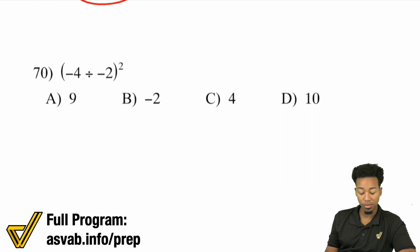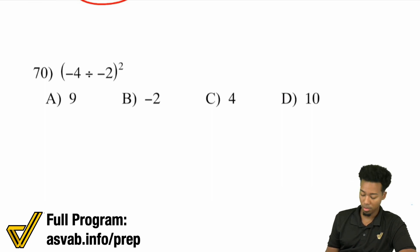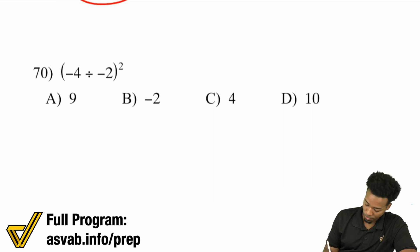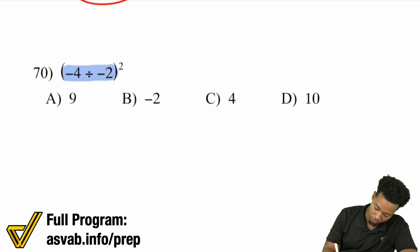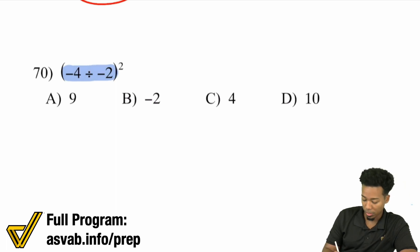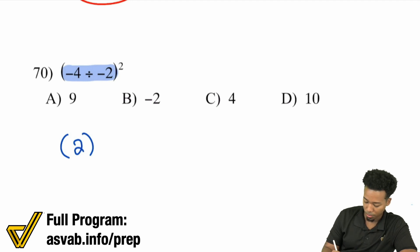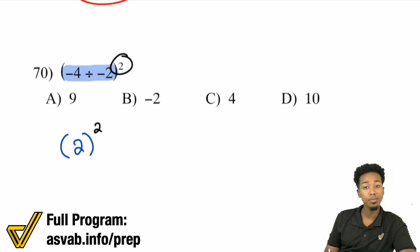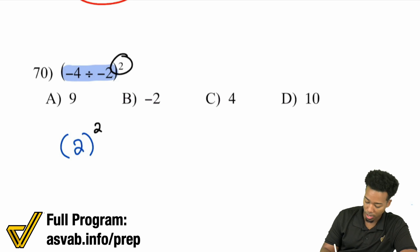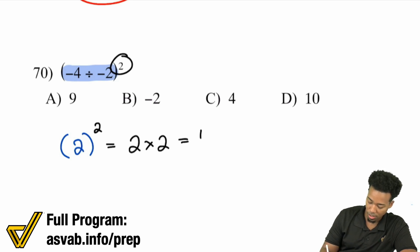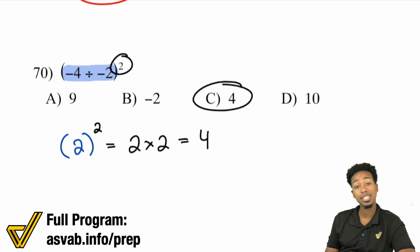Number 70: we have (negative 4 divided by negative 2) all squared. First, we take care of negative 4 divided by negative 2 — a negative divided by a negative is a positive, and 4 divided by 2 is 2. Remember that we're squaring all of that at the end. 2 squared means you take 2 and multiply it by itself, which is 4. And that's C.